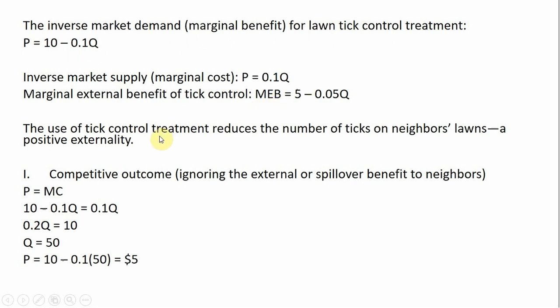The idea here is that the use of tick control treatment reduces the number of ticks not only on your lawn — the private marginal benefit — but it'll have spillover effects by reducing the number of ticks on your neighbor's lawns. So first we're going to look at the competitive outcome, the unregulated outcome, ignoring the external benefits.